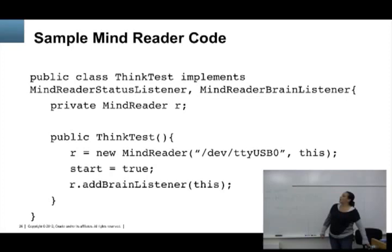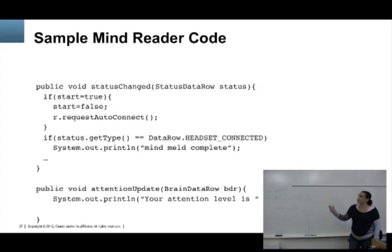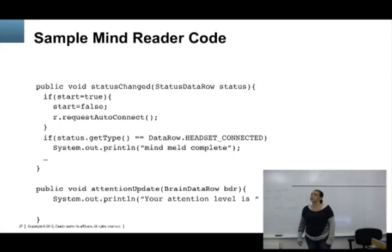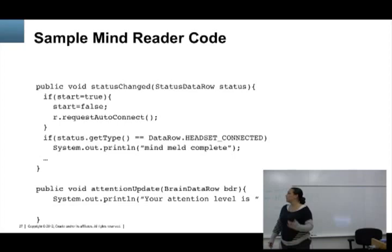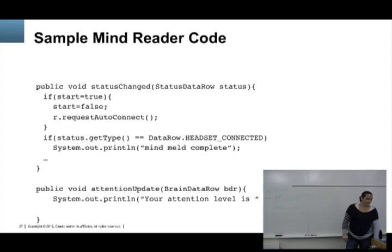Here's a piece of the code. We set up a bunch of listeners listening for status packets and brain values. We initialize the mind reader device where it's detected on the USB dongle, add the listeners, and then do something whenever the status changes or the attention and meditation values change. The first demo just displays the attention and meditation values. The second demo tries to control the airplane with my mind — it doesn't quite work that well. I wouldn't encourage anyone to control an airplane with their mind at this point, but it's something cool.